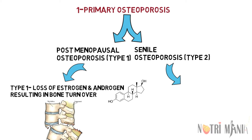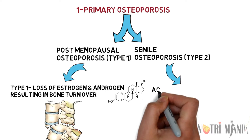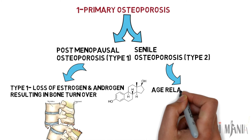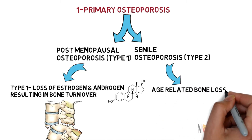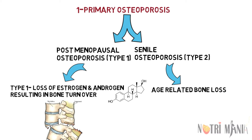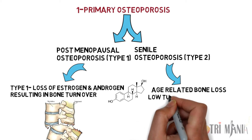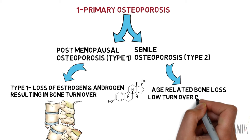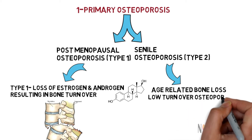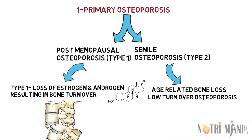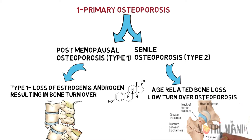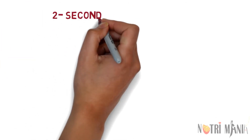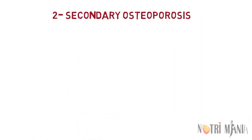Senile osteoporosis Type 2 is caused by systematic senescence, induced by the loss of stem cell precursors, with a predominant loss of cortical bone. Primary Type 2 osteoporosis is also called low turnover osteoporosis because the rate of bone turnover is much lower in this type. It typically results in hip fractures.